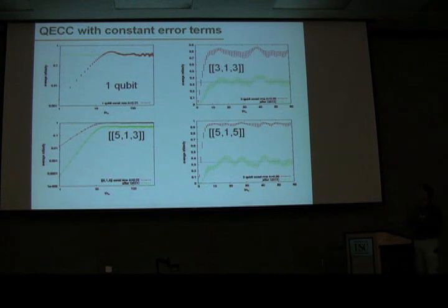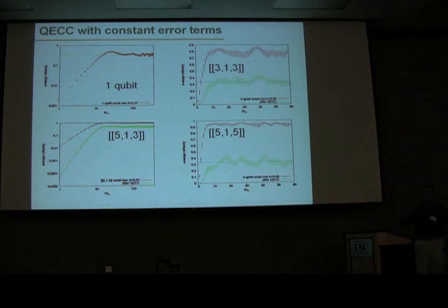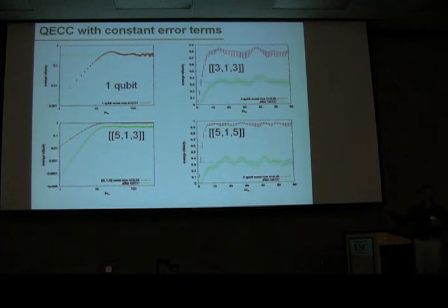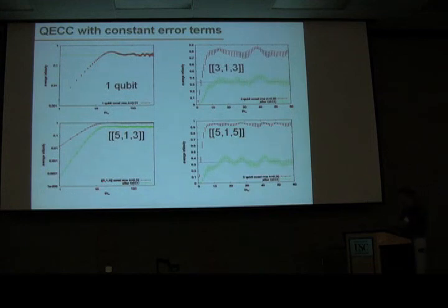These are simulations where I run error correction in the worst possible settings. I just add a field — an error field — which is constant. It's an infinitely correlated noise, and then I average over that noise. For one qubit I have one, two, three fields. For a 3,1,3 code I have three fields along the correctable error direction. For a 5,1,3 code I have 15 fields. And this is the 5,1,5 code correcting two errors — I have five fields along the z direction, phase fields. What you see, with typical amplitude over a time of about 10 pulse durations, you totally generate enough errors to spoil your error correction.